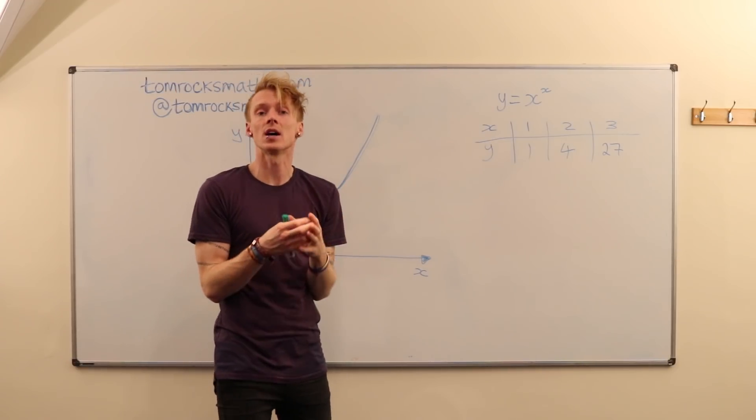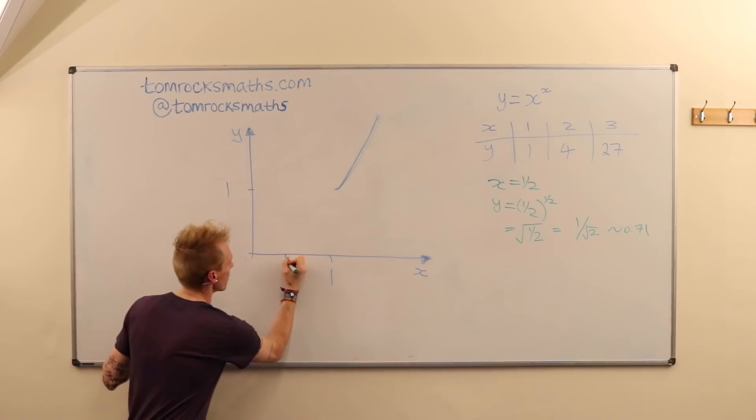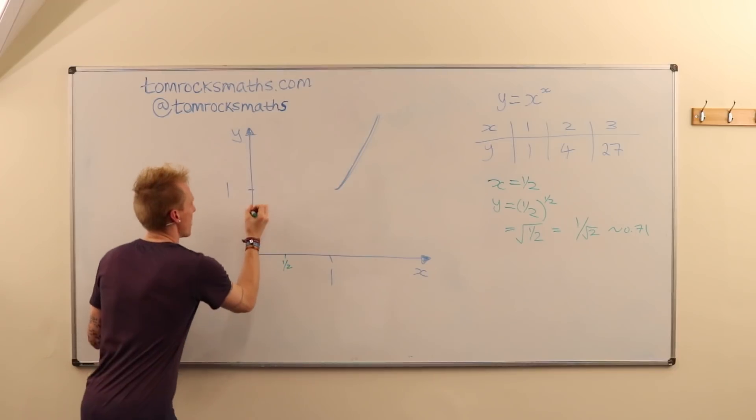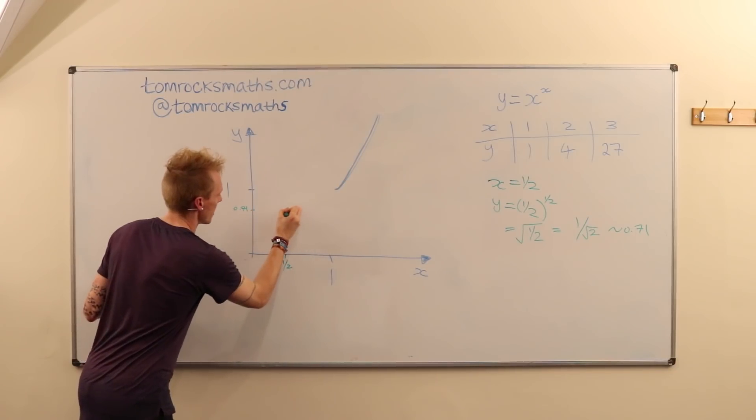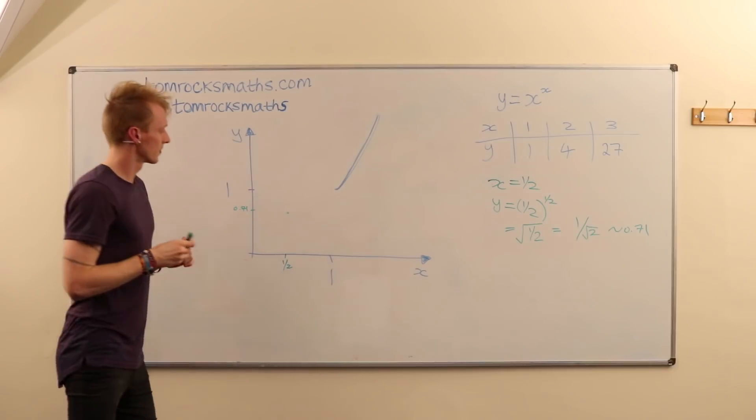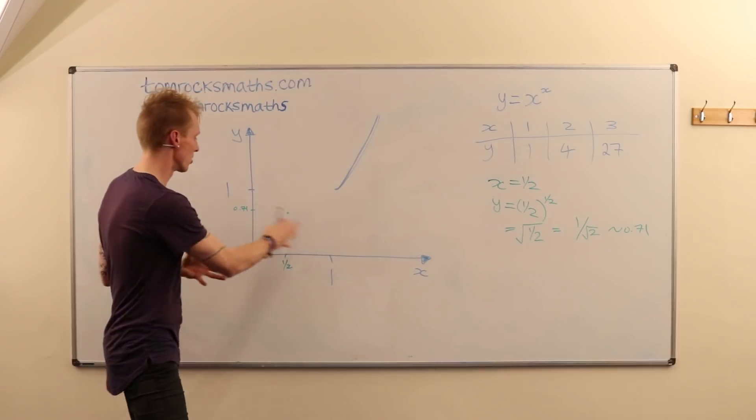So let's consider the point x equals a half. So for x being a half, y is about 0.71. So sort of here. Okay, that's good. We've got somewhere, we have a point between 0 and 1.